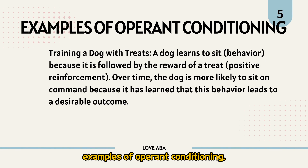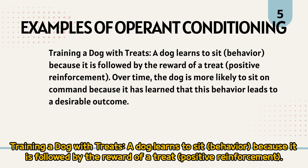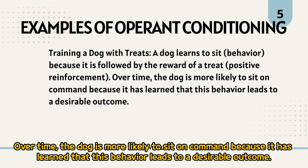Example of operant conditioning — Training a dog with treats: A dog learns to sit (behavior) because it is followed by the reward of a treat (positive reinforcement). Over time, the dog is more likely to sit on command because it has learned that this behavior leads to a desirable outcome.